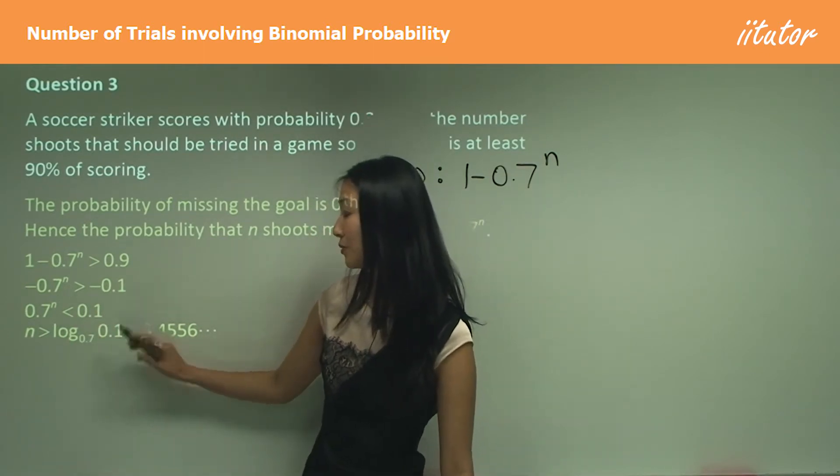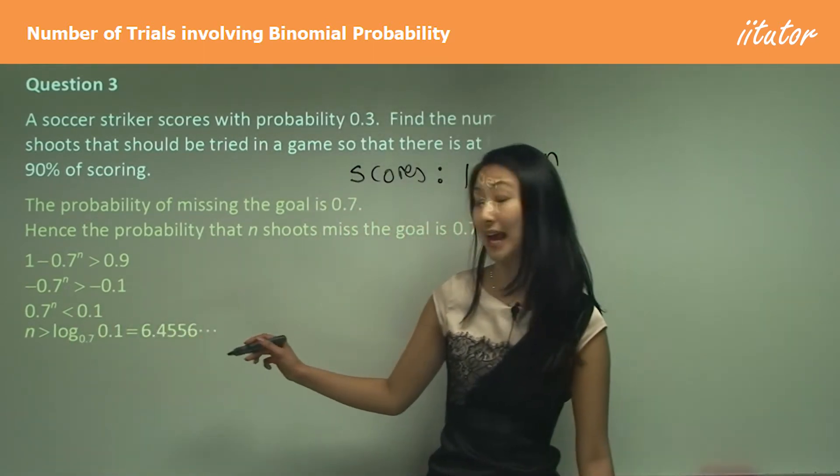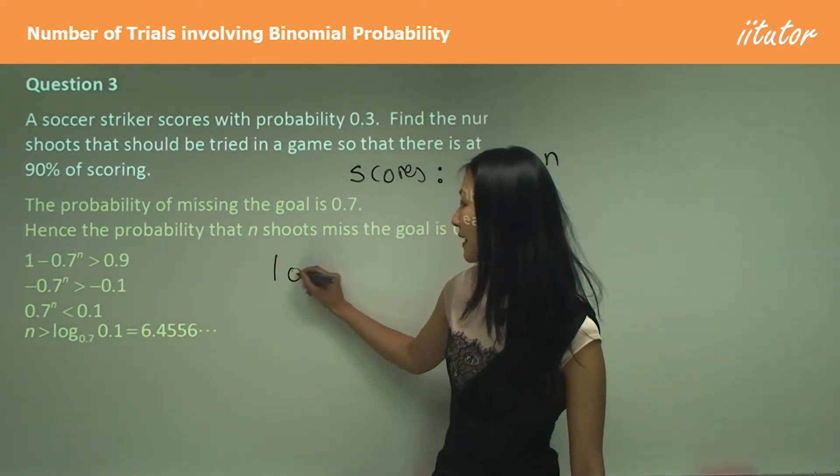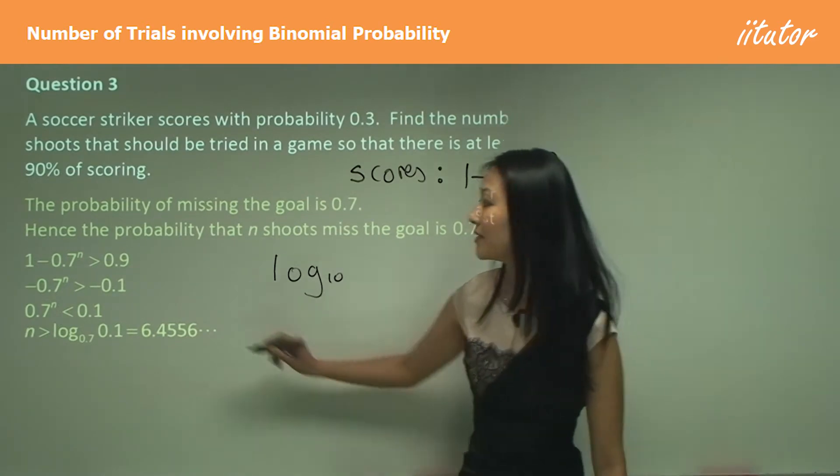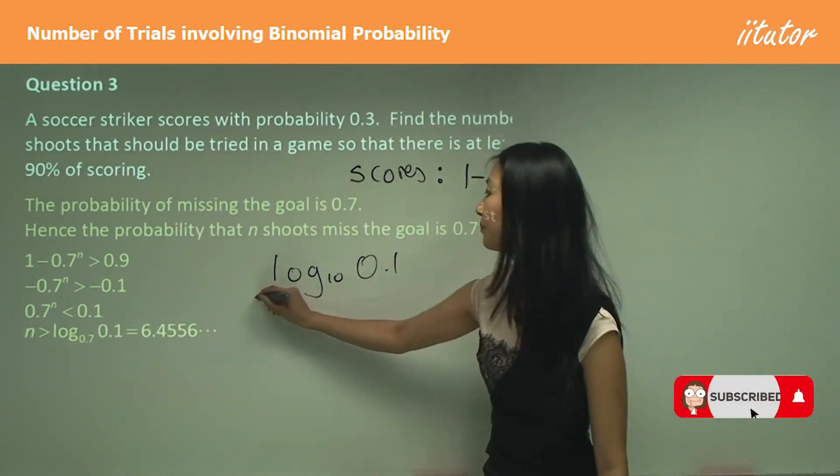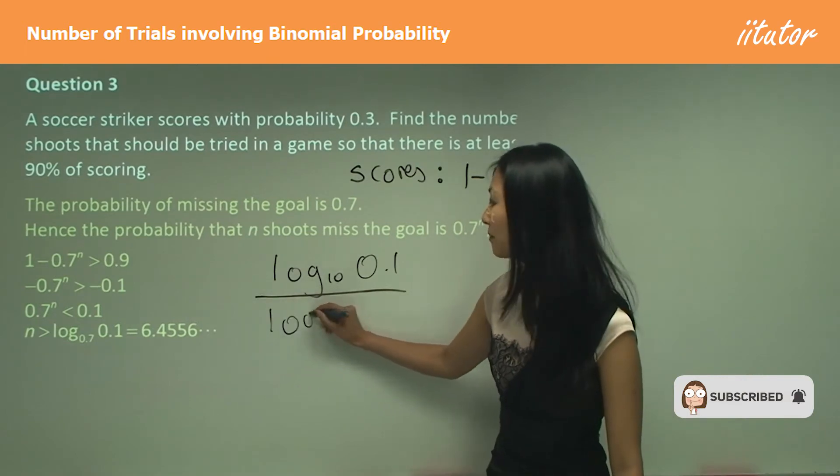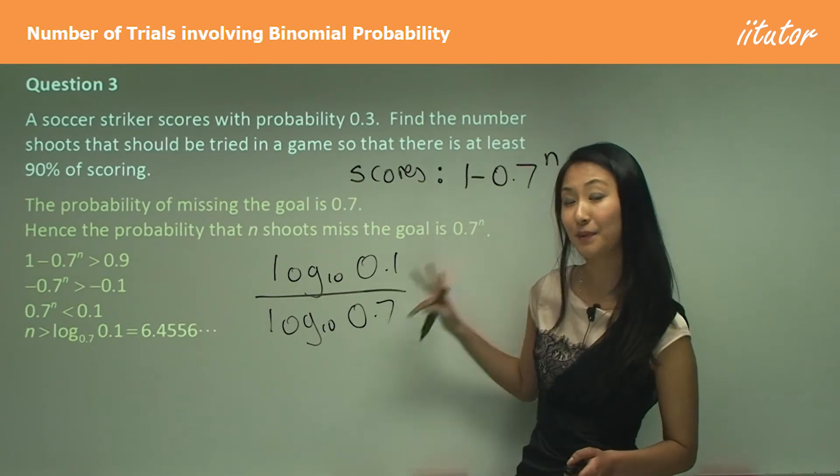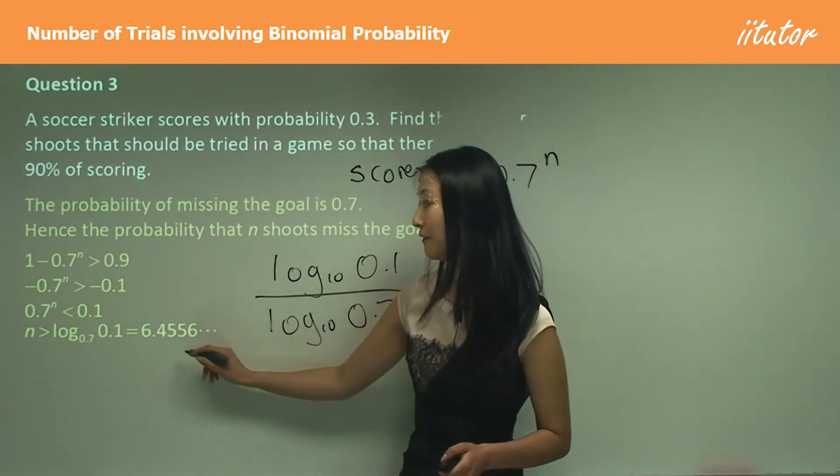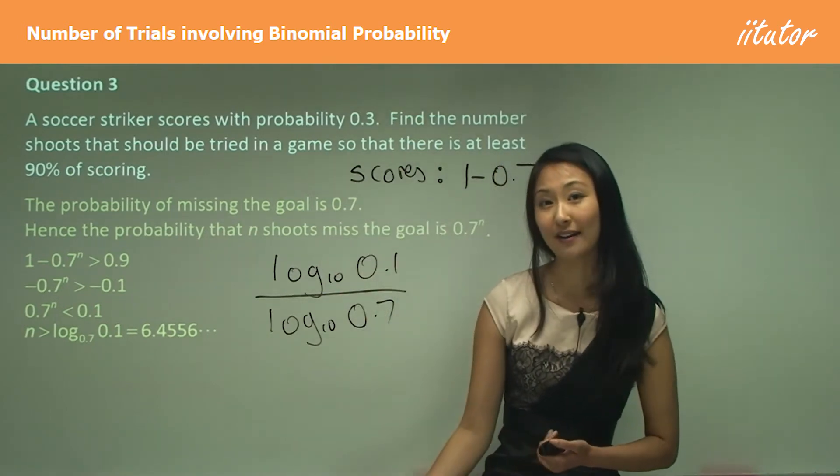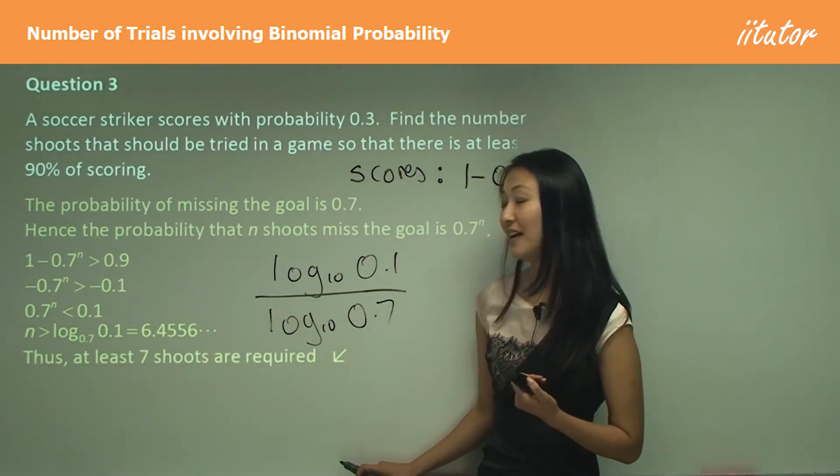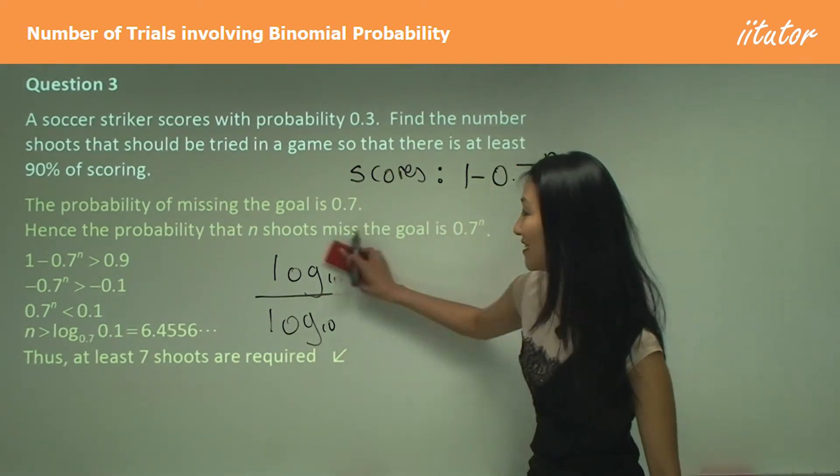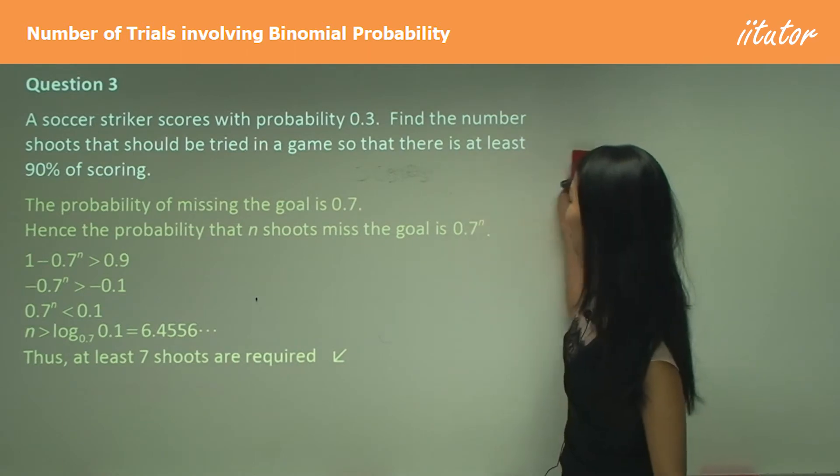Actually, you can't put that straight into your calculator. You need to know how to change the base. Do you guys remember that? Let's change the base to log base 10. This 0.1 goes on top and log base 10, and since that's a base, that goes on bottom. Put that into your calculator and you should get 6.4556. So n must be greater than that. Therefore, this soccer player has got to shoot at least seven times before there's actually a 90% chance of scoring, which is actually quite terrible when you think about it.